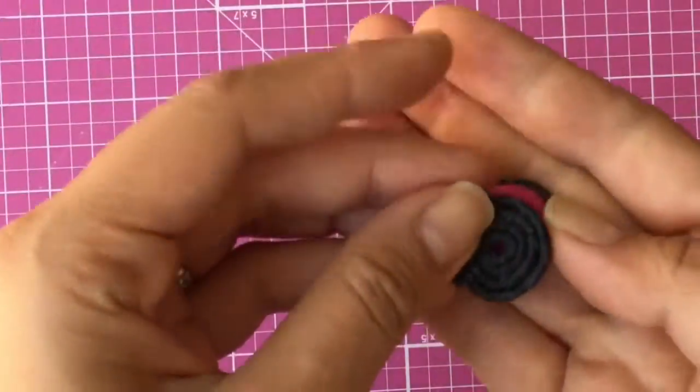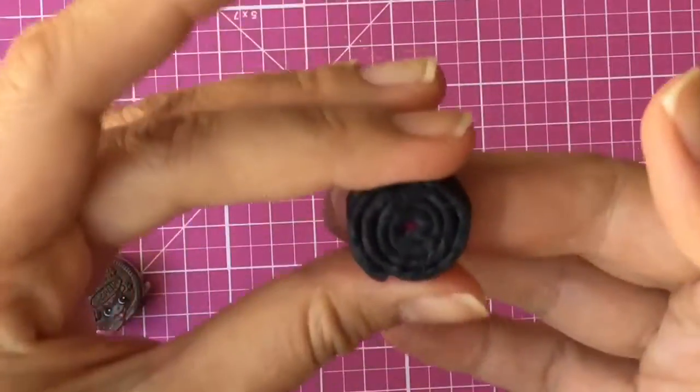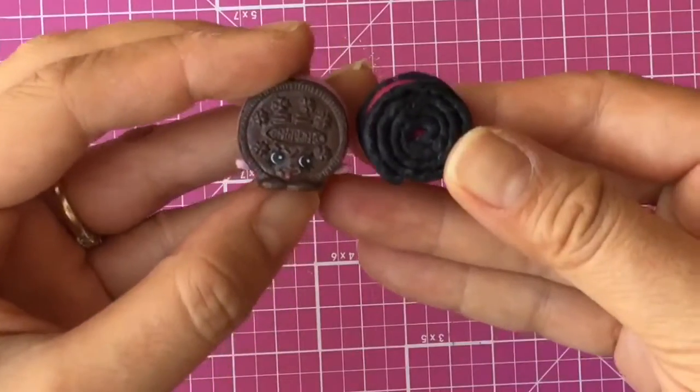And then we're going to put the top of her on top like that. Oh my gosh. Does it look like an Oreo cookie so far? Are they twinsies? Do you see that?